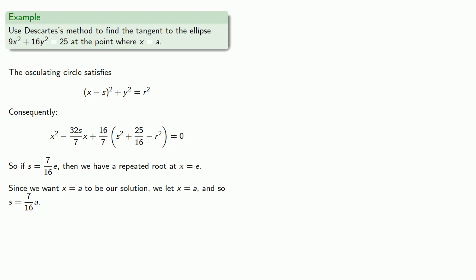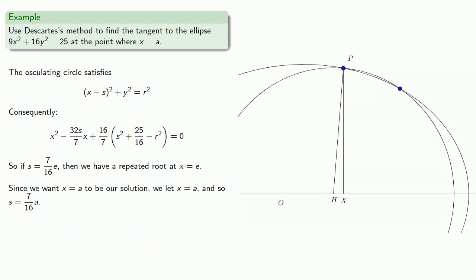Since we want x equals a to be our solution, we let x equals a, and so s equals 7/16 a. So, in our ellipse, if ox equals a, and oh equals 7/16 a, then h will be at the center of the osculating circle.